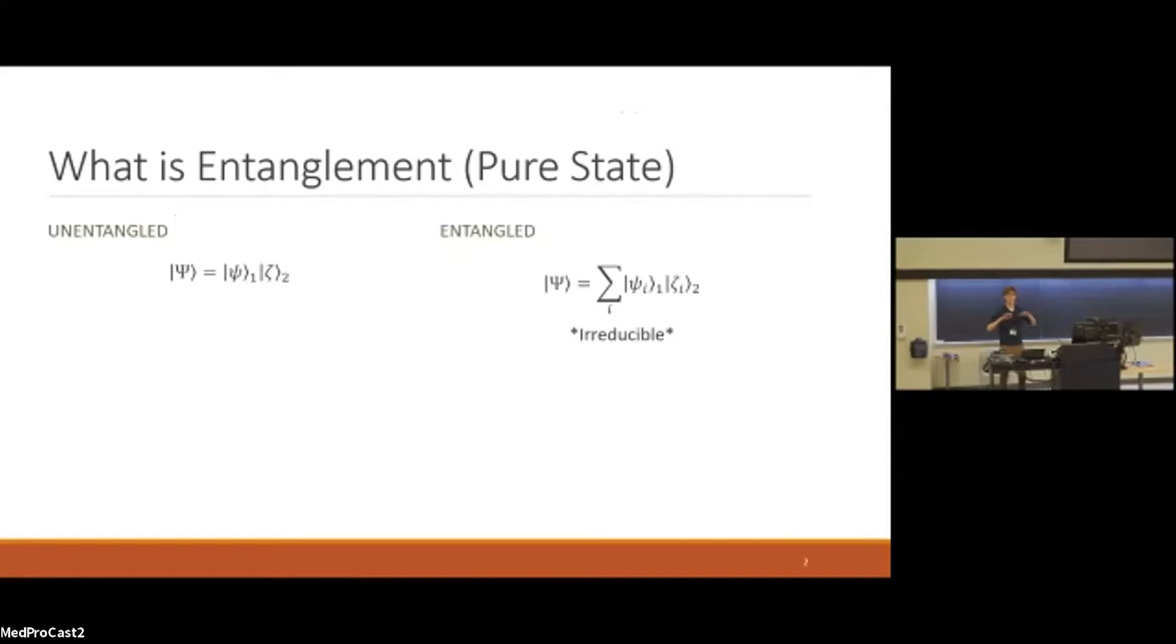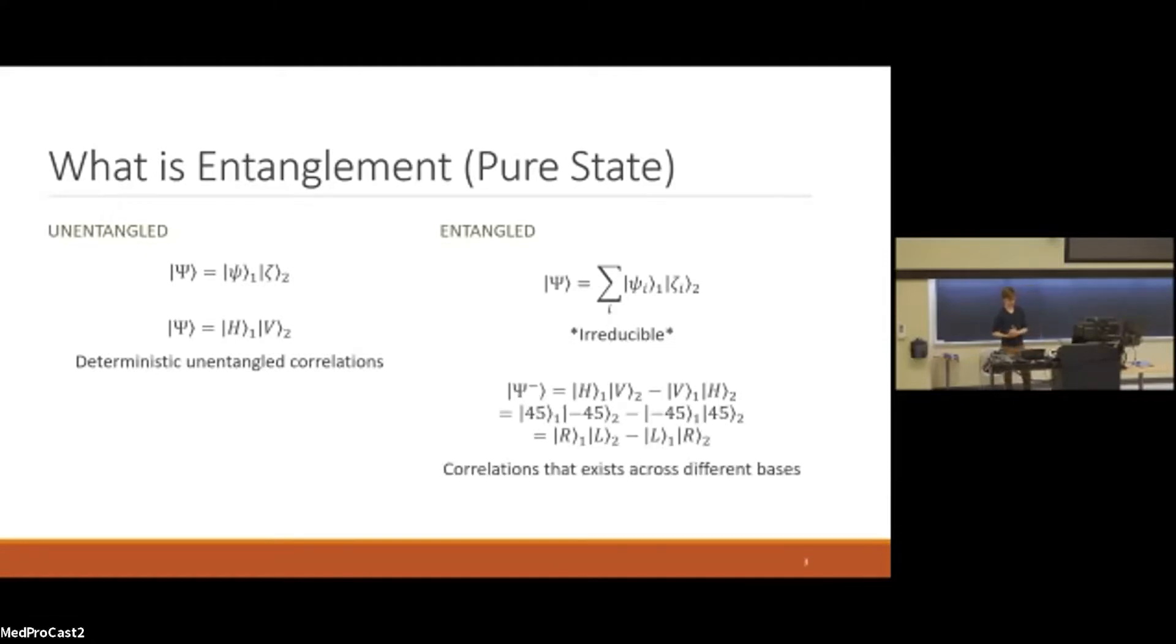So I'm starting off for a general audience. What is entanglement? So we're talking about what basically we want to be able to build on chip later on. An unentangled pure state can be fully divided into two separate quantum states. An entangled state would have to be represented as a sum of different pure states, and it is irreducible. It has correlations that exist over different bases.